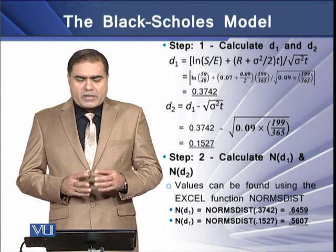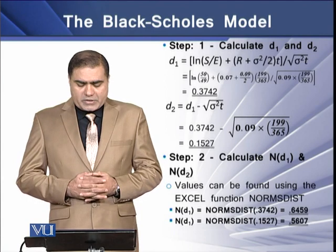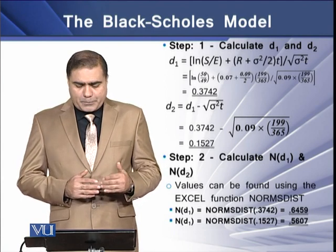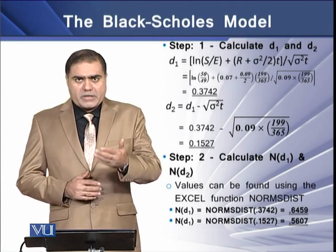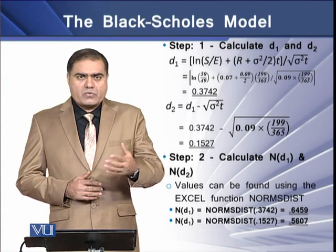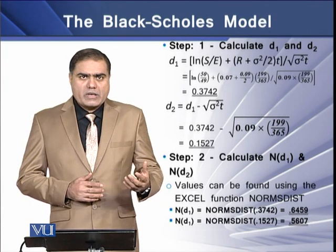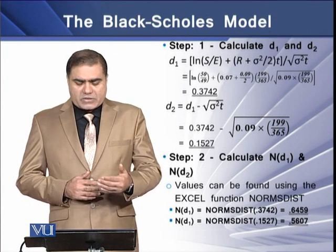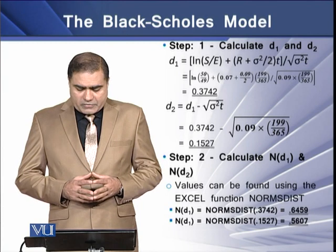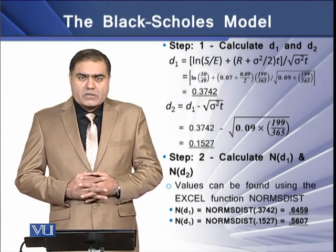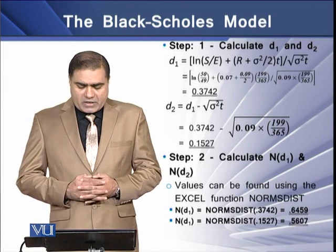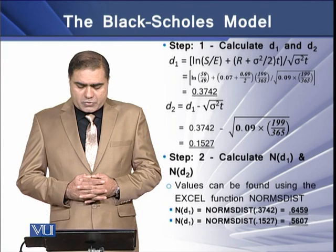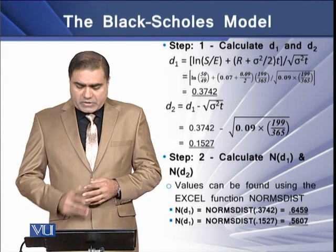Step 2: Determine the values of N(D1) and N(D2). These two values can be found using the normal distribution function in Excel. Using this function, the value of N(D1) is 0.6459 and the value of N(D2) is 0.5607.